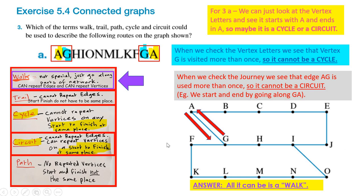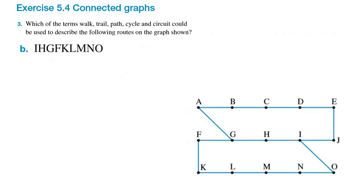That was a tricky one. When you see A at the start and A at the end, you'd think it's definitely a cycle or circuit. I thought it was a circuit at first — I spotted the two Gs and said it's not a cycle because we repeated G, so it must be a circuit. But when I checked the answer in the back, it said it was a walk. Then I traced all the way around and realized we're going along that edge connector line twice — so it is not a circuit, and that's why it has to be a walk.